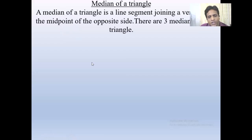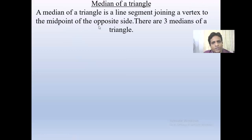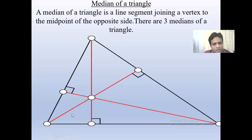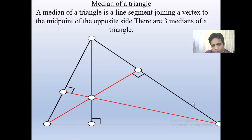Now we will discuss the median of the triangle. A median of a triangle is a line segment joining a vertex to the midpoint of the opposite side. There are three medians of a triangle. Looking at the picture: this is a triangle, this is the base, this is the height and this is a vertex — so this is a median. The point where they meet is called the orthocenter.